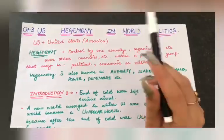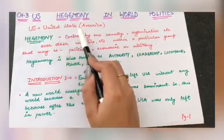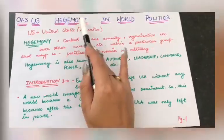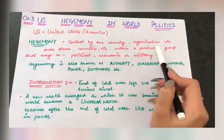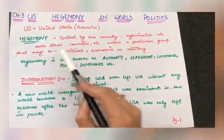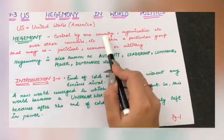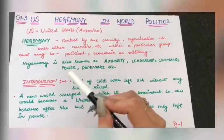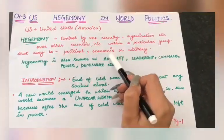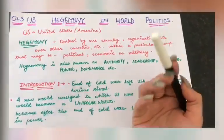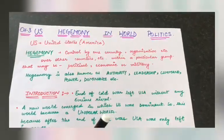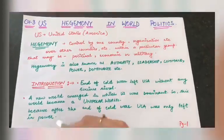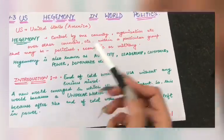The chapter I'm going to discuss with you today is 'US Hegemony in World Politics.' US obviously refers to the United States — America — which we discussed in the last two chapters as well. The next key word is hegemony. What is hegemony? It means control by one country, organization, etc., over other countries within a particular group — whether political, economic, or military control. Hegemony is basically dominance; it is also known as authority, leadership, command, and power.